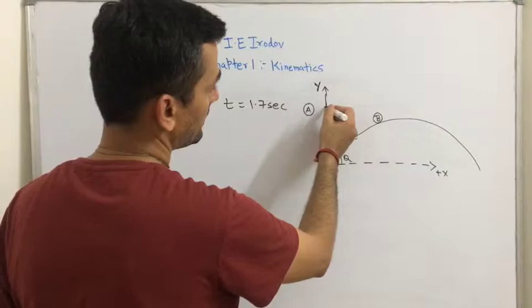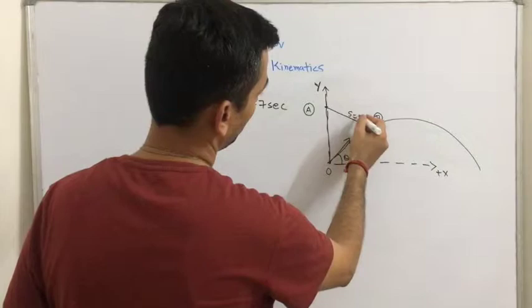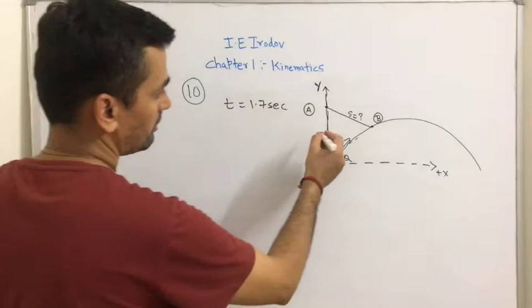Body B is actually projectile motion. We need to find out the distance between these two bodies. Let us say after t is equal to 1.7 seconds.